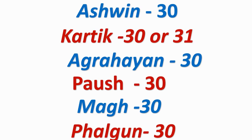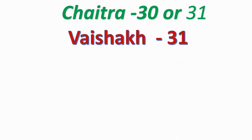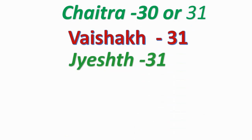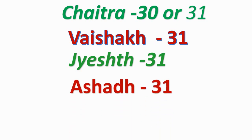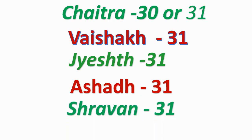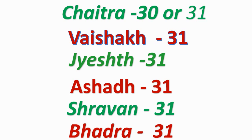Points to remember from what we learned today. We learned the months of the solar year: 1st Chaitra — 30 or 31 days. 2nd Vaishak — 31 days. 3rd Jyeshtha — 31 days. 4th Ashad — 31 days. 5th Shravan — 31 days. 6th Bhadra — 31 days.